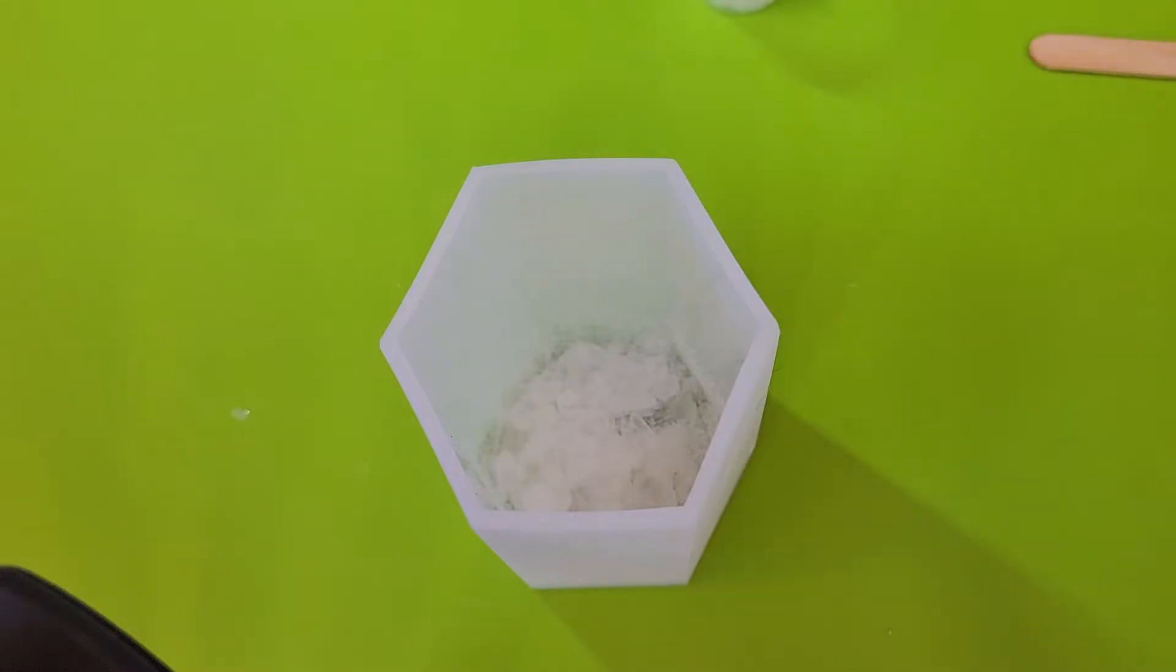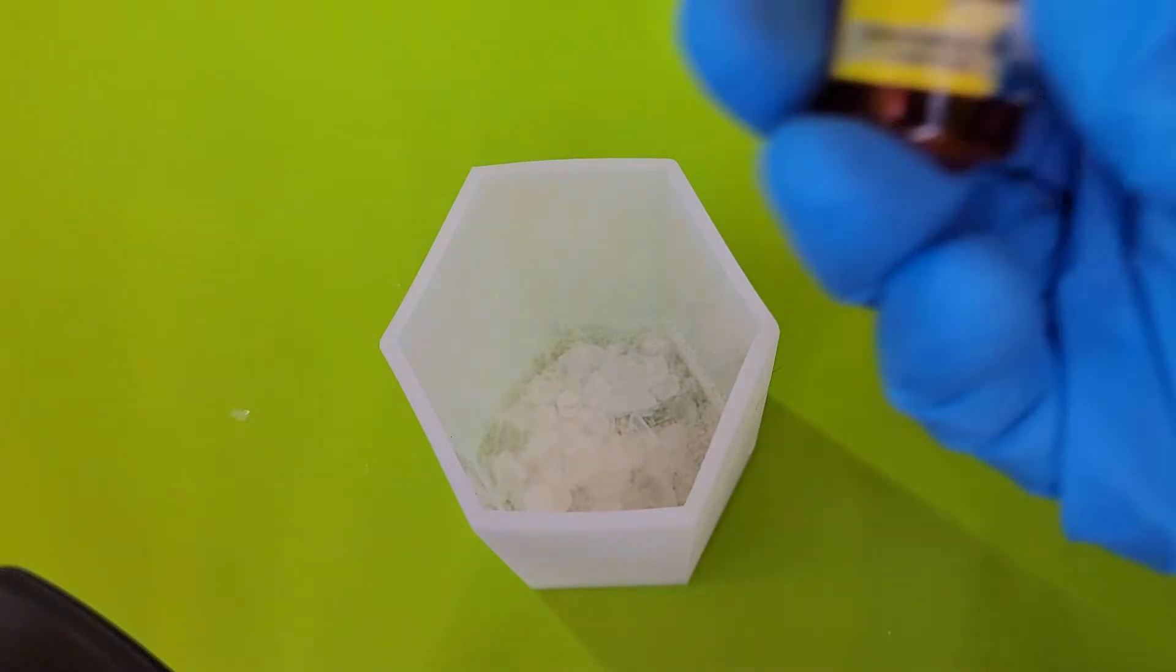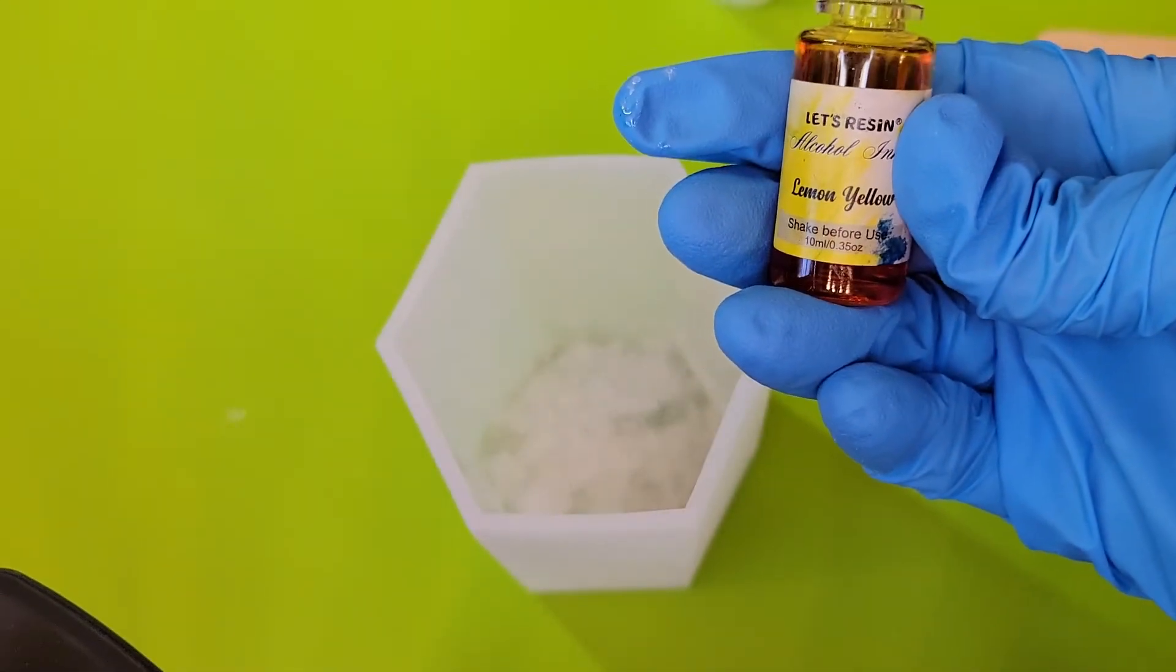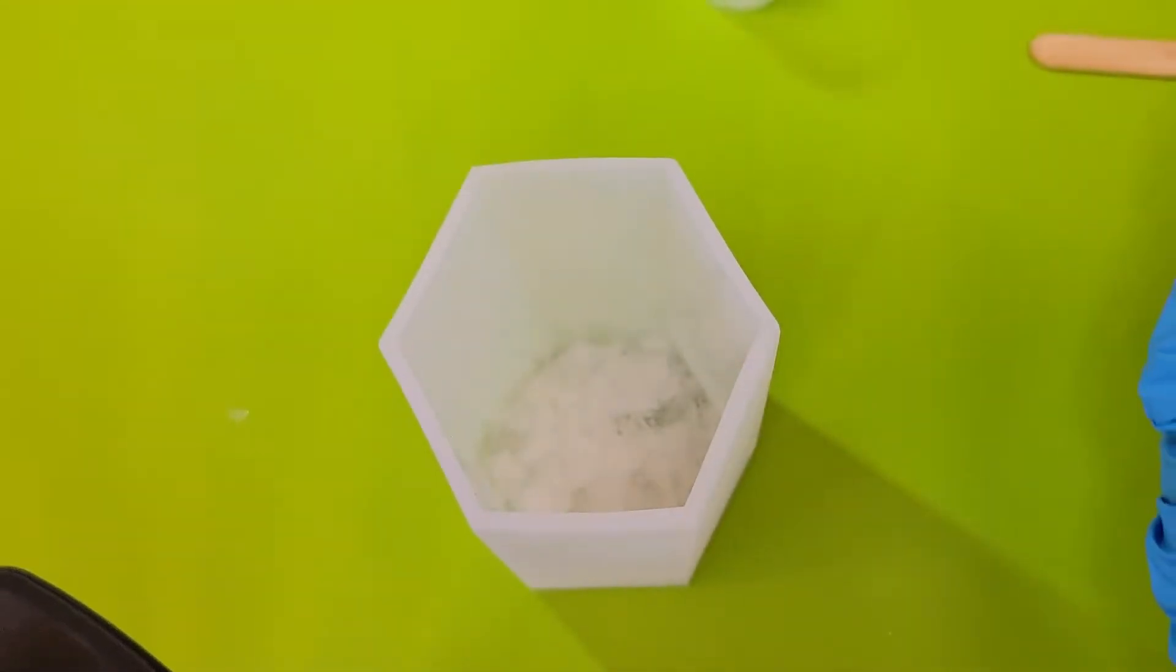Now I got my large salt particles from thesage.com. I don't even know if they're still in business, I got that so many years ago. But I will look them up and see, and if they are I will provide a link. I warmed my resin in a water bath first before I mixed it, and now I'm just adding a little bit of lemon yellow alcohol dye.